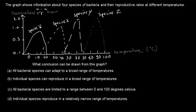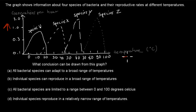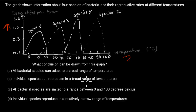The next question: The graph shows information about four species of bacteria and their reproductive rates at different temperatures. The y-axis shows generations per hour and the x-axis shows temperature. Species W, X, Y, and Z are each shown. What conclusion can be drawn? A. All bacterial species can adapt to a broad range of temperatures. B. Individual species can reproduce in a broad range of temperatures. C. All bacterial species are limited to a range between 0 and 100°C. D. Individual species reproduce in a relatively narrow range of temperatures. Pause the video.